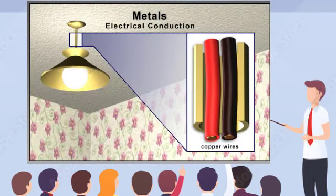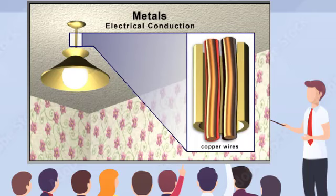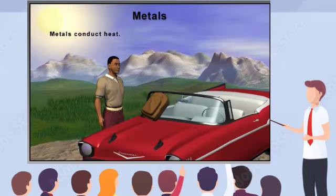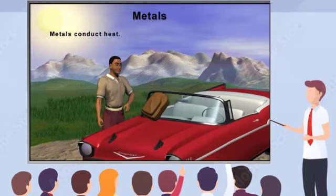Metals also conduct electricity and heat. The wires to the lights above your head are most likely made of the metal copper. Electricity travels through copper wire because electrons are passed from one metal atom to another as the electrical current passes along the line. The heat-conducting property of metals can be demonstrated by touching the hood of a car on a hot or cold day. On a hot day, the metal hood conducts heat to your hand.